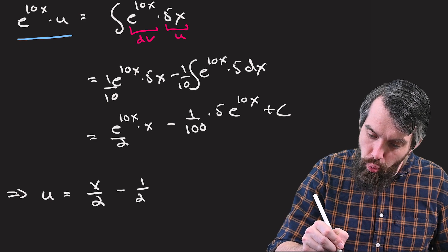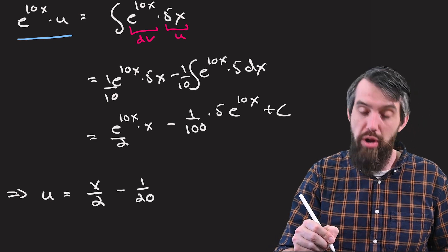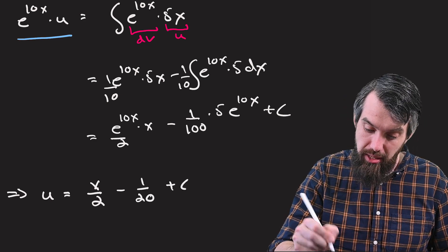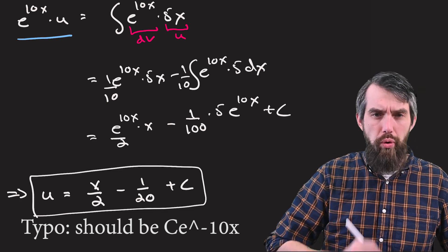minus one twentieth, and then that's not multiplied by anything, and then plus c. And that gives me an answer for u, but that's still not enough.